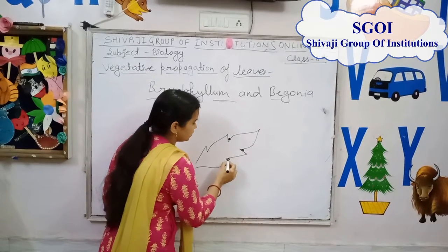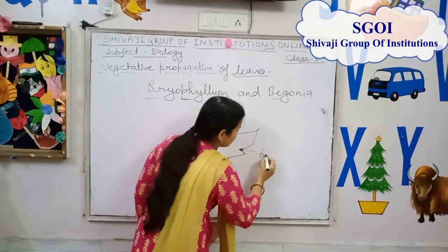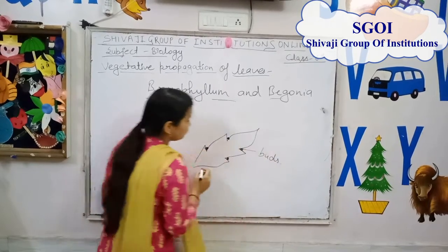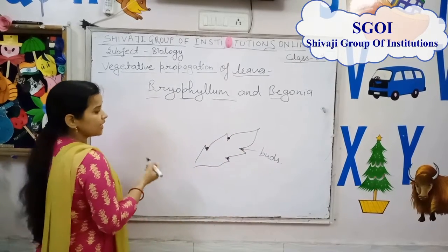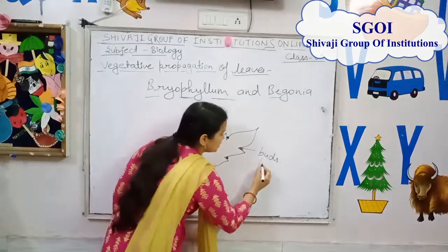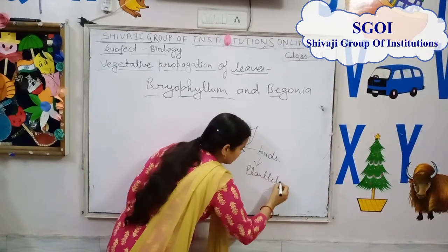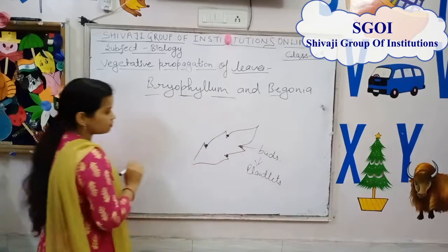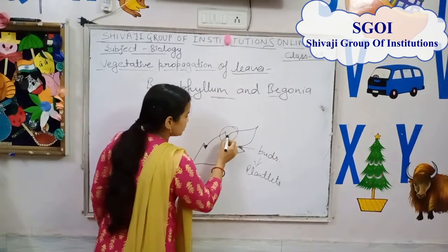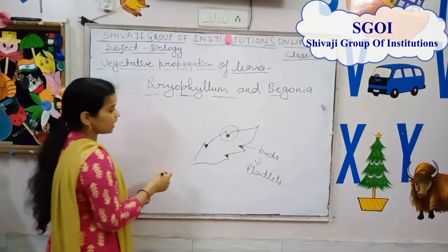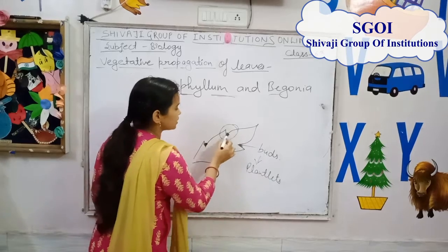Here you can see, at the margin or at the notches of the leaves, the buds are present. From these buds, a new plantlet gets developed. If these buds get detached from the parent plant, a new plant arises from these buds.